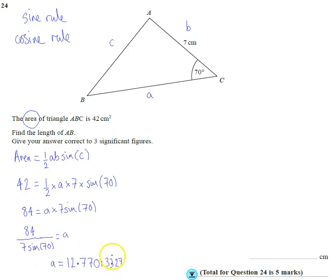Alright, now we know this is roughly 12 cm. Now what we're going to do, we know what this is, we're going to find out this, so we're going to now use the cosine rule.